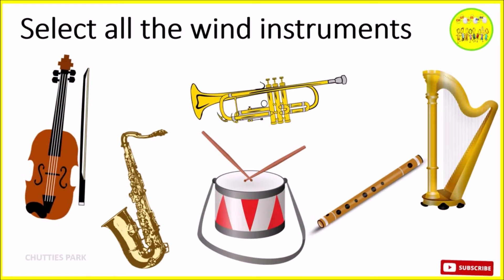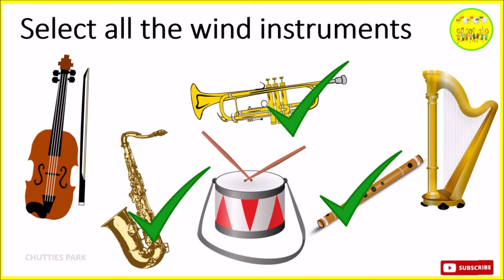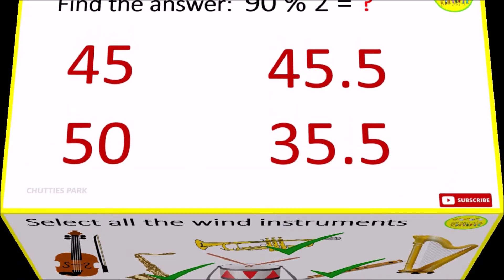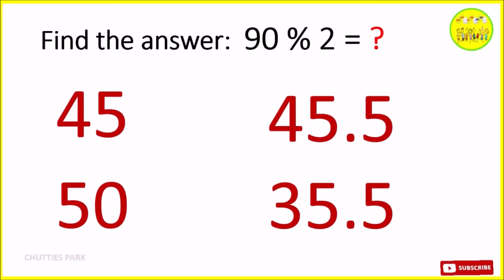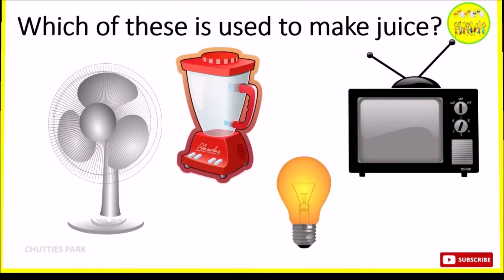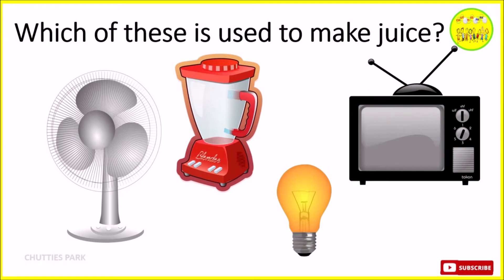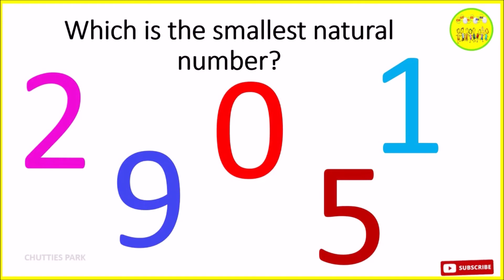Select all the wind instruments. Find the answer. Which of these is used to make juice? Which is the smallest natural number?